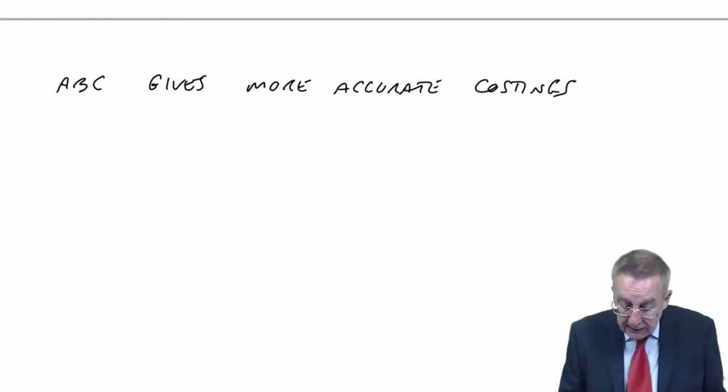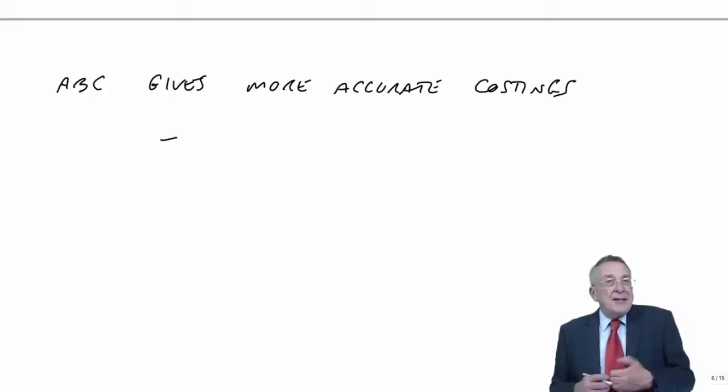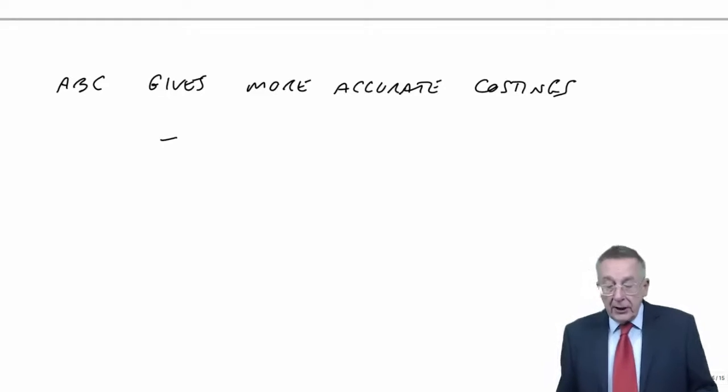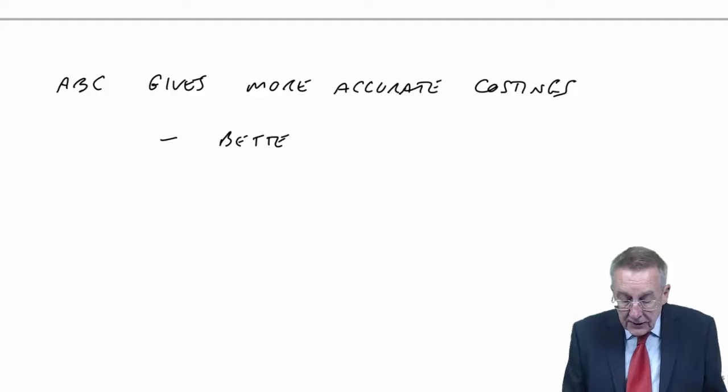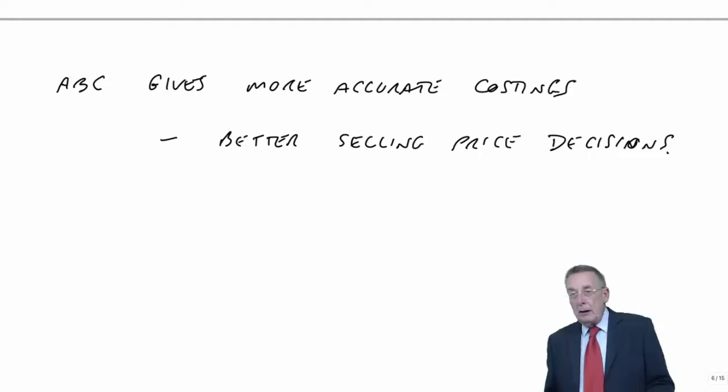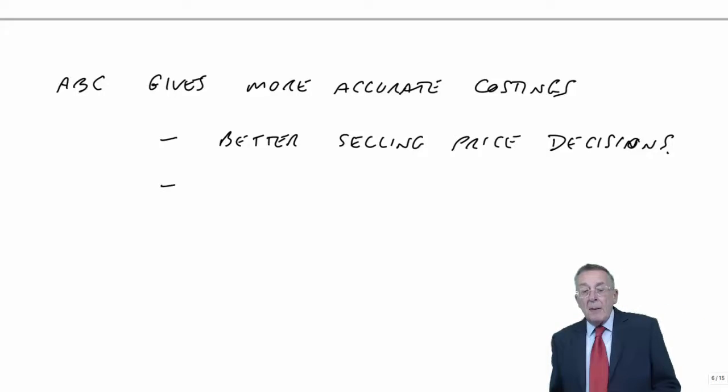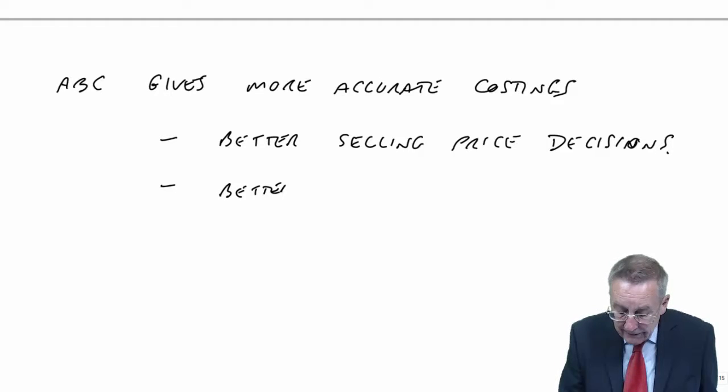Well, the reason we care is that we said in the lectures on the previous chapter that we want costings - one reason is to fix a selling price. Surely the more accurate the costings we have, the better the selling price decisions will be. With activity-based it's product C we should sell for more, not product A at all. So there are better decisions about selling price and also better decisions based on profitability.